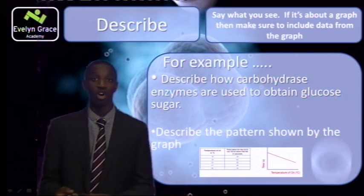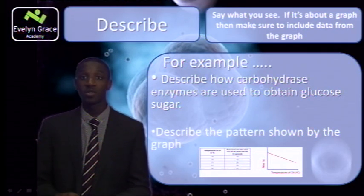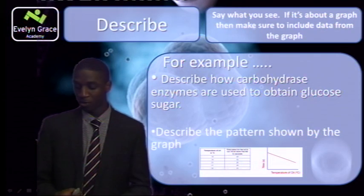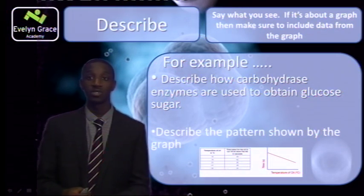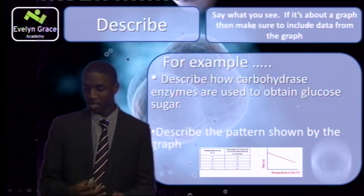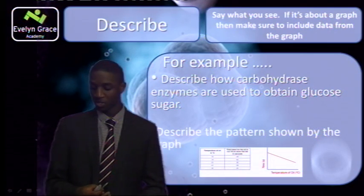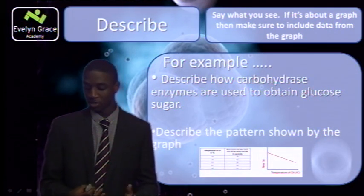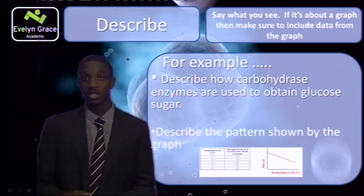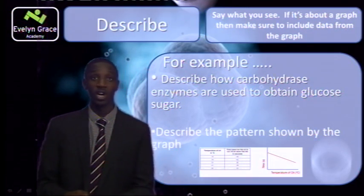The second example involves a graph. It says: describe the pattern shown by the graph. As you can see from the graph, as the temperature of the oil increases, the time taken for the oil to slide down the tube by 10 centimetres decreases. To quote some data: at 10 degrees Celsius it takes 48 seconds, but at 52 degrees Celsius it takes 23 seconds. So I've quoted the graph and stated that as temperature increases, the time taken decreases.